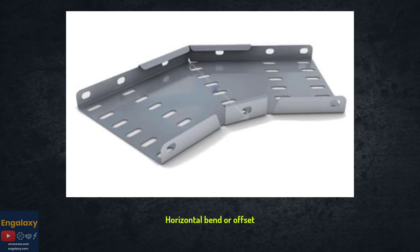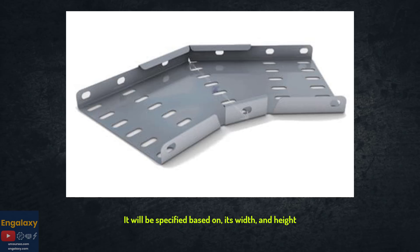Horizontal bend or offset. Commonly, it will be a 45 degree bend. It will be specified based on its width and height. Also, you need to mention its thickness.